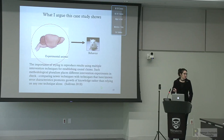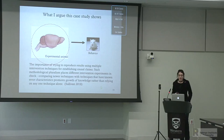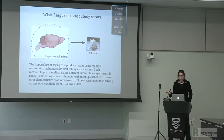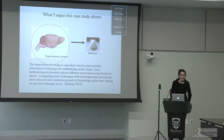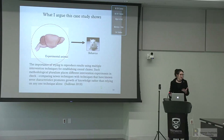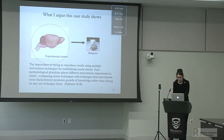What this case study shows is the importance of trying to reproduce results using multiple intervention techniques for establishing causal claims. Such methodological pluralism places different intervention experiments in check. When comparing newer techniques with techniques that have known error characteristics, it's a better way to promote the growth of knowledge rather than relying on any one technique alone. Even if the discovery was somewhat fortuitous, it demonstrates the importance of comparing different techniques to get a better understanding of the system.